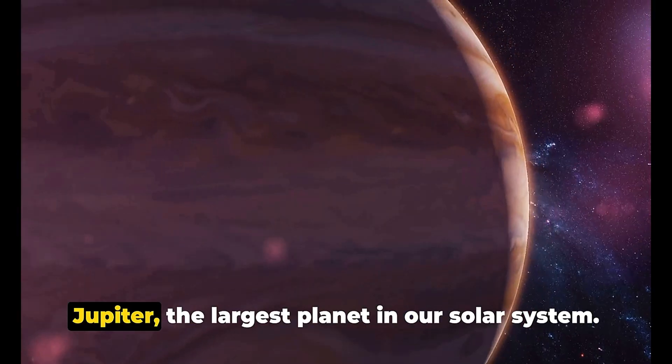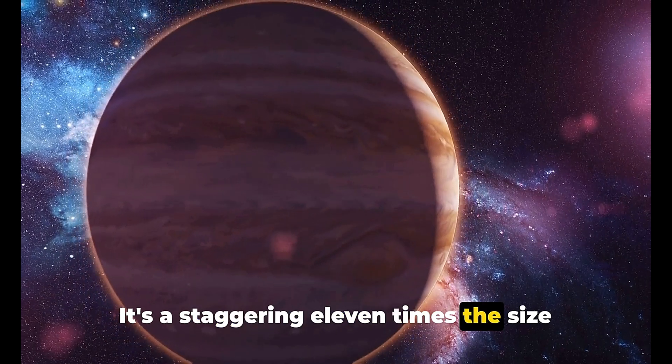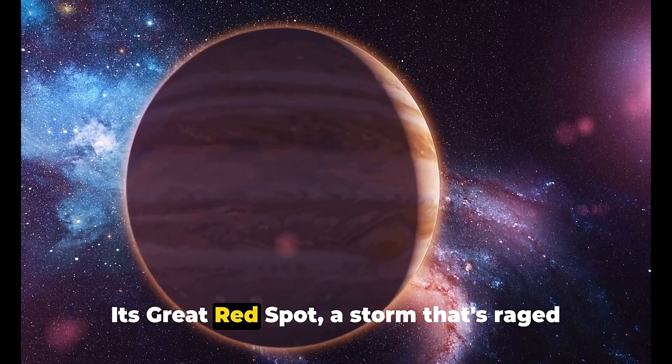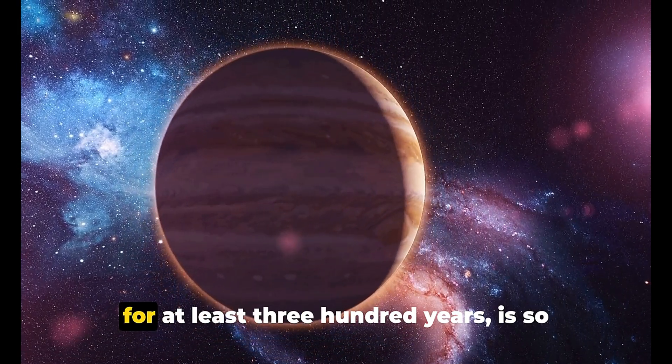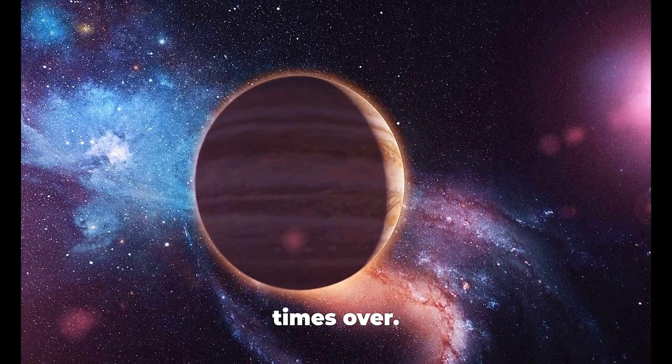Next up is Jupiter, the largest planet in our solar system. It's a staggering 11 times the size of Earth. Its great red spot, a storm that's raged for at least 300 years, is so large that Earth could fit inside it three times over.